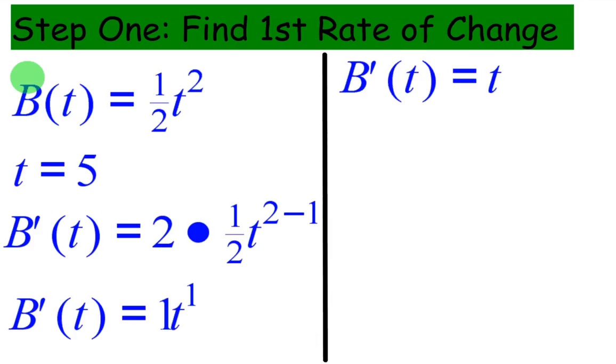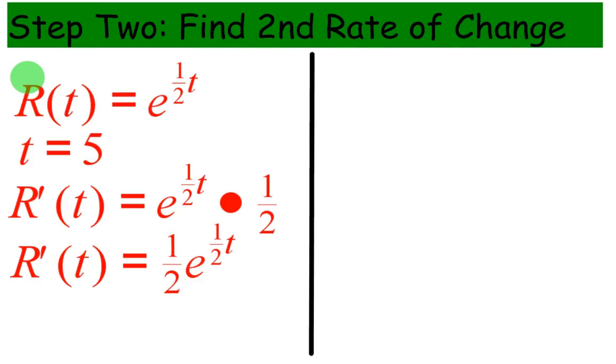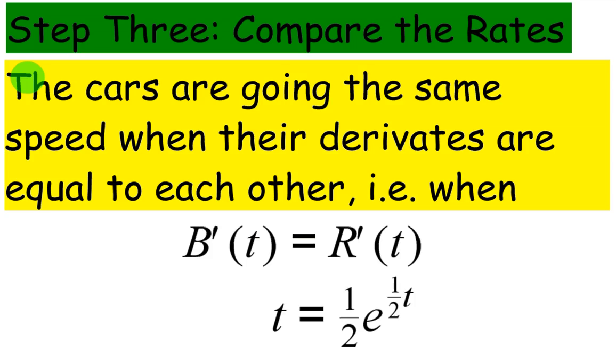Here is our derivative for the blue car we've already figured out to be t. If you remember from the previous examples, the derivative of the red car, the speed, is 1/2 e to the 1/2 t. So we're just going to set those two equations equal to each other. In other words, B'(t) equals R'(t).